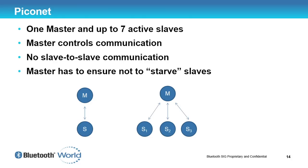Here we have one master with one slave, and further along one master with three slaves. The master always controls the communication — the timing and who is spoken to. There is no slave-to-slave communication; if you want to send data from one slave to another, you cannot do that in Basic Rate. The master also has to continuously poll the slaves to give them an opportunity to talk, so they aren't starved of time.